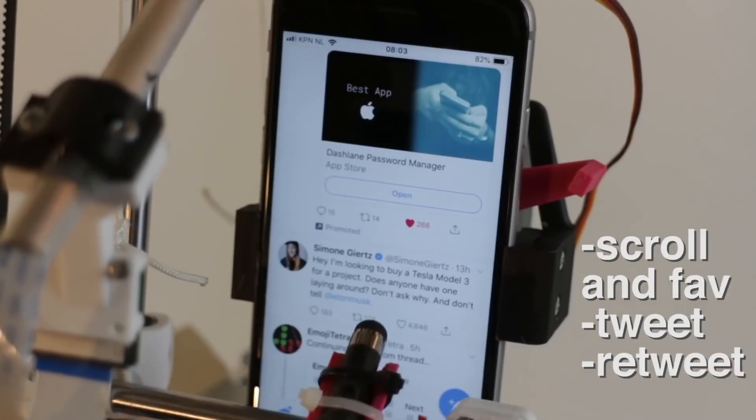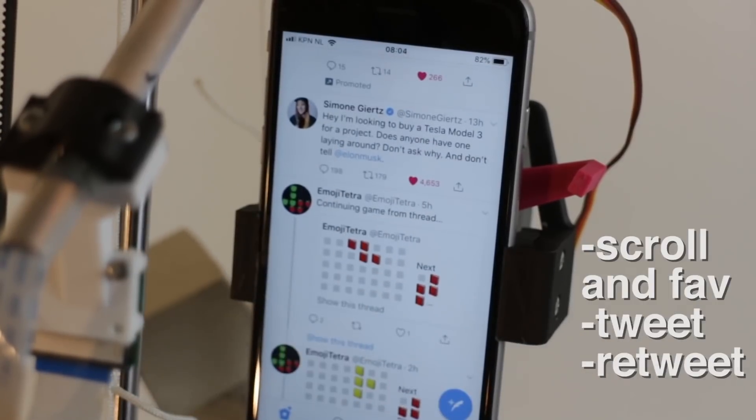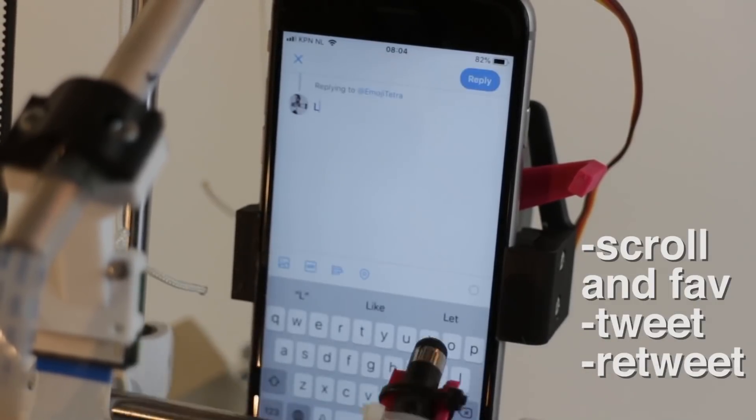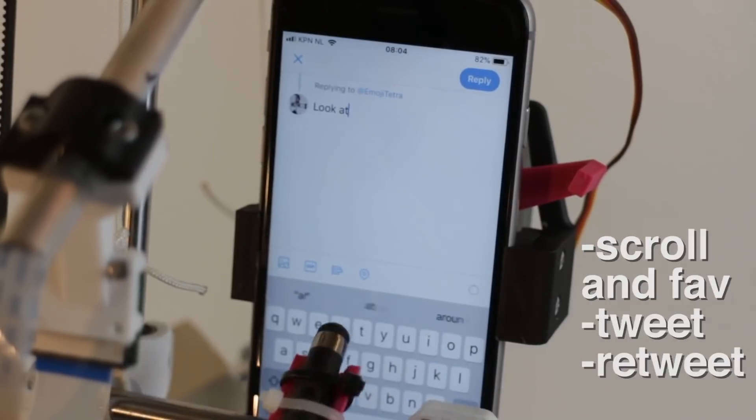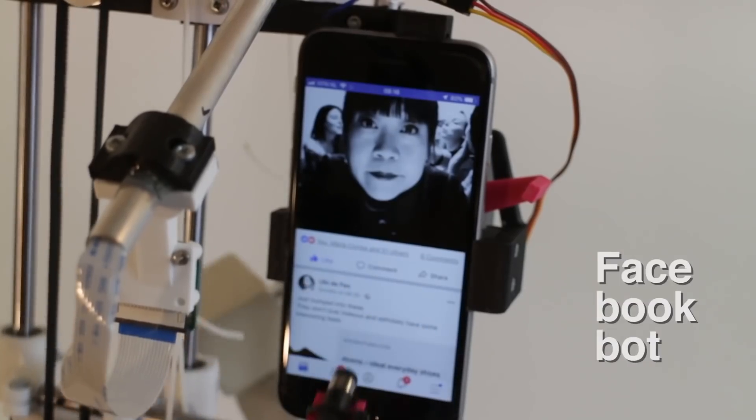It can scroll through Twitter and like every post. It can post its own tweets. It can even like things on Facebook.